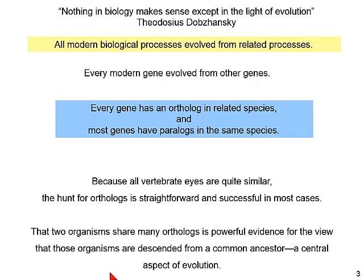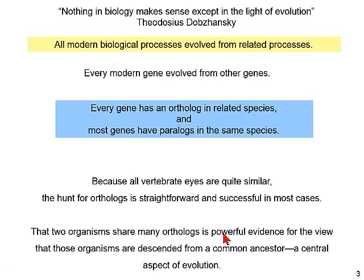More precisely, every gene has an ortholog in related species, and most genes have paralogs in the same species. Because all vertebrate eyes are quite similar, the hunt for orthologs is very straightforward and successful in every case. That two organisms share many orthologs is very powerful evidence for the idea that they evolved from a common ancestor, which is of course a central aspect of evolution.